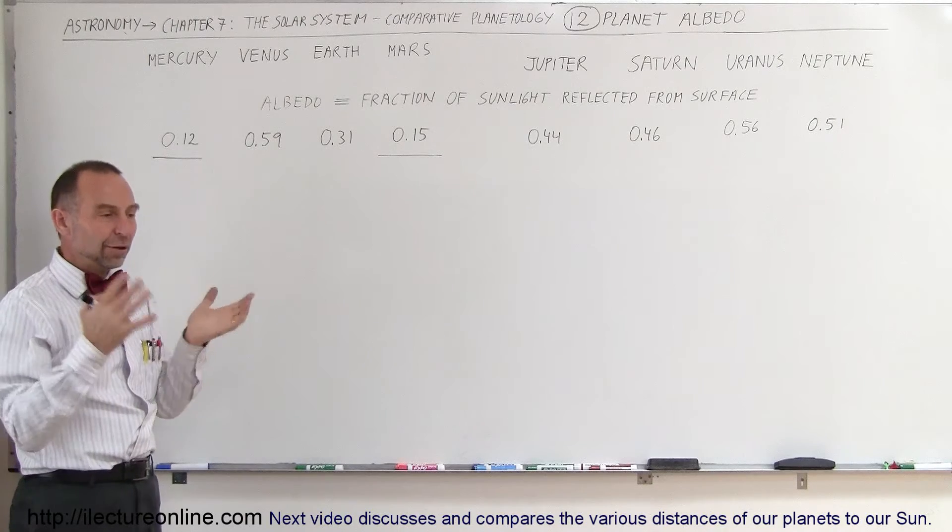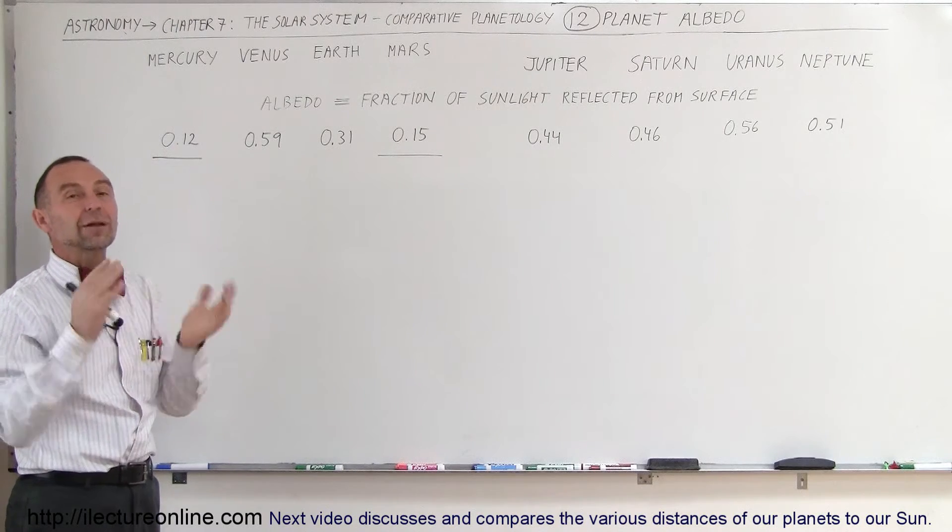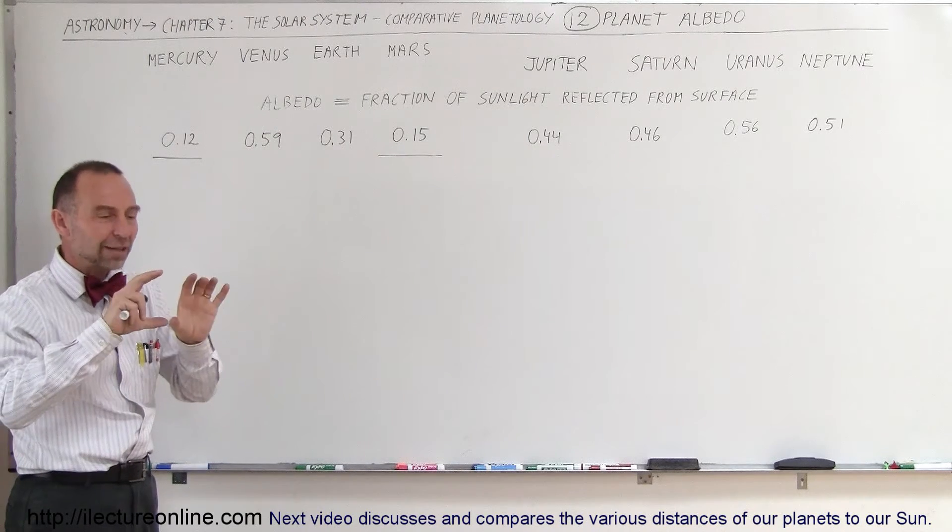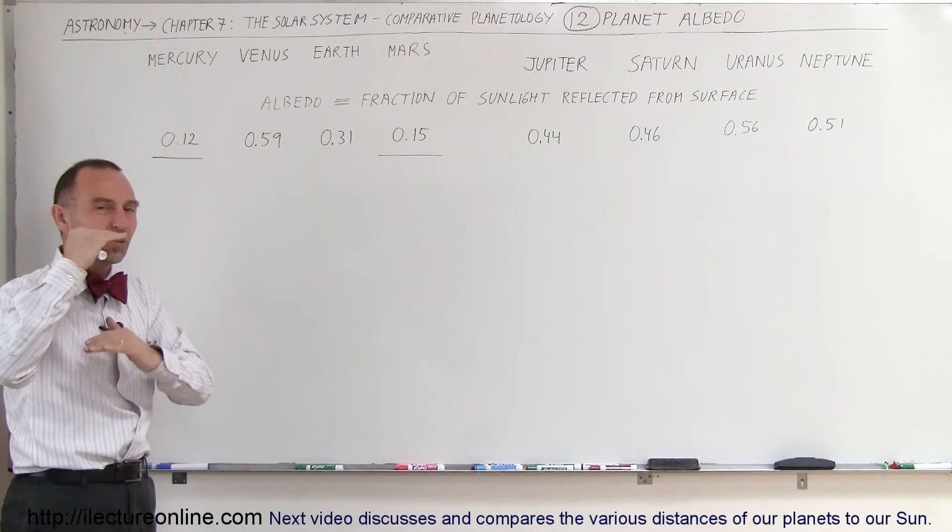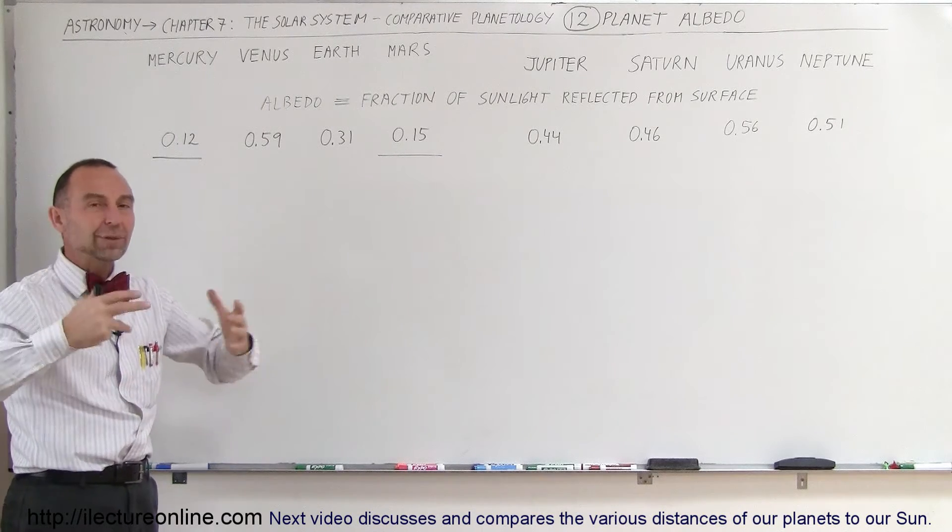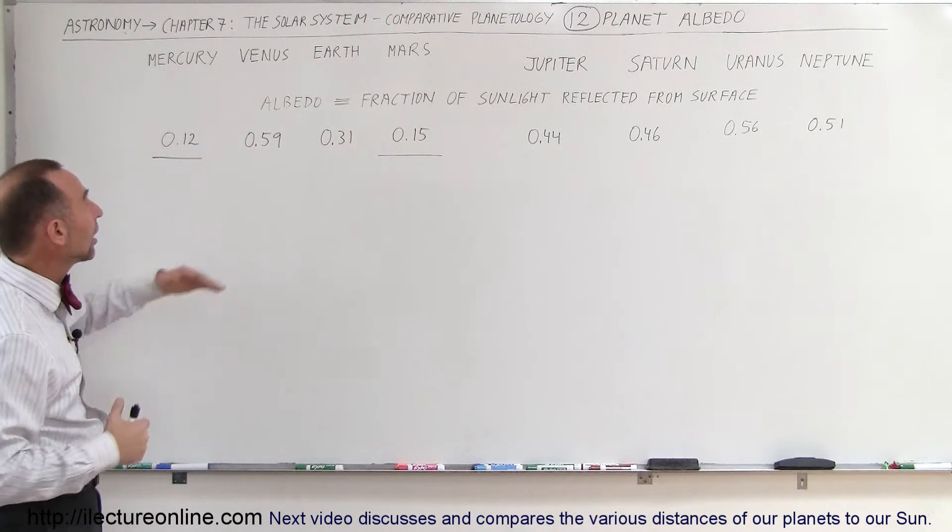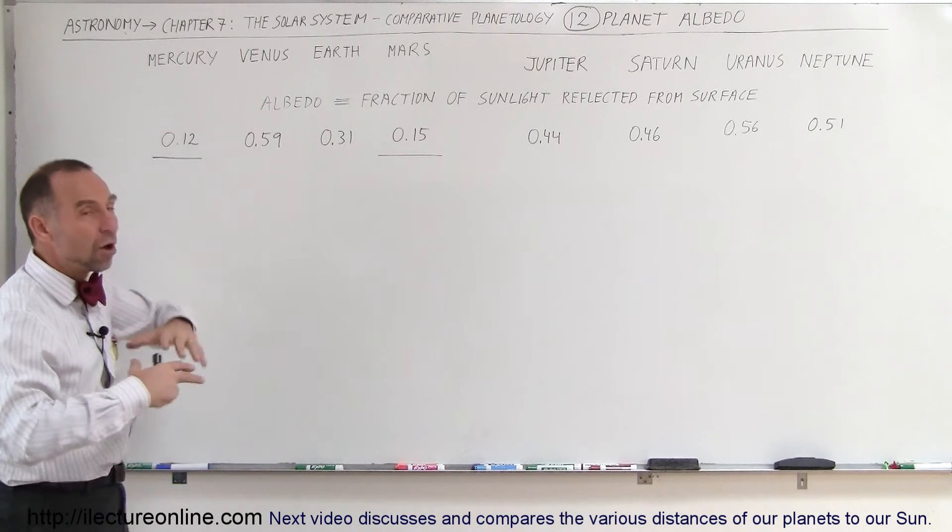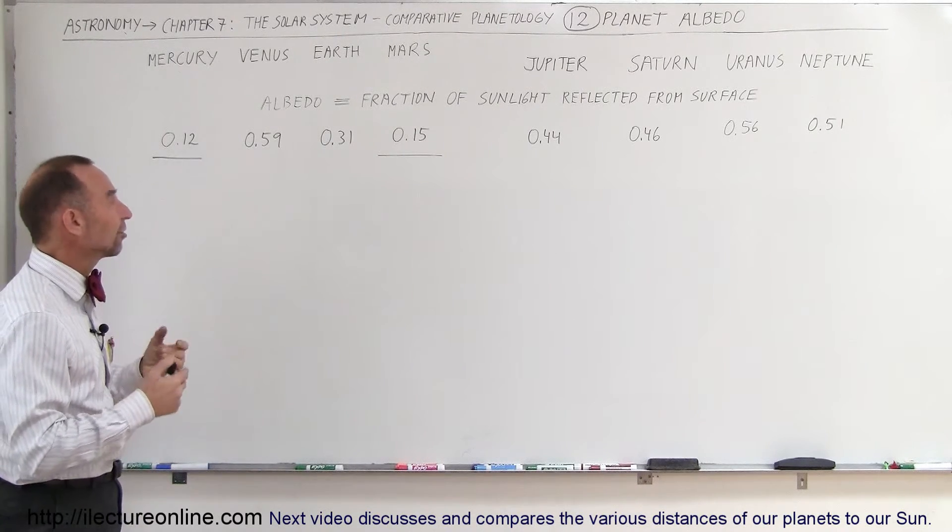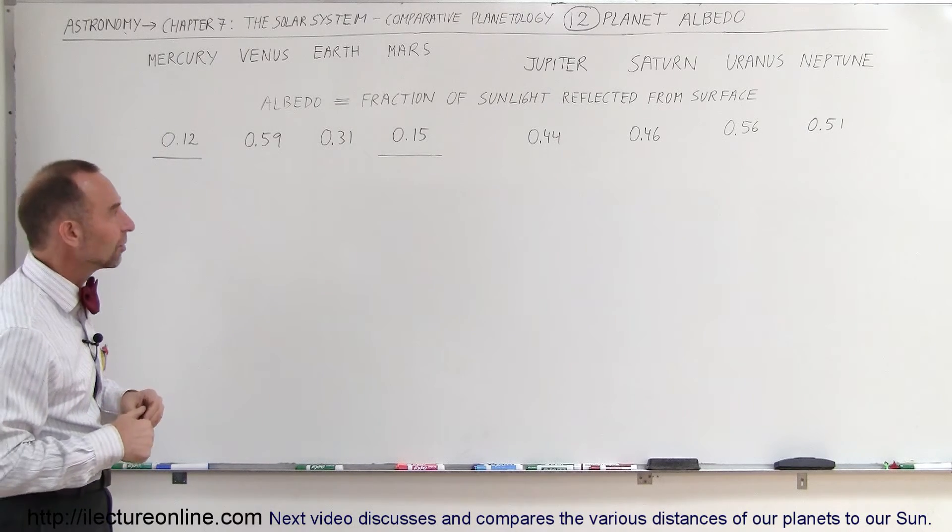If you look at a picture of Venus, you can see that there's nothing about the surface that you can recognize because the cloud cover is so thick, the atmosphere is so thick and so dense that we can simply not see through the atmosphere, through the clouds, and see the surface. So all the light, I shouldn't say all the light, but a great percentage of light is simply reflected back into space.